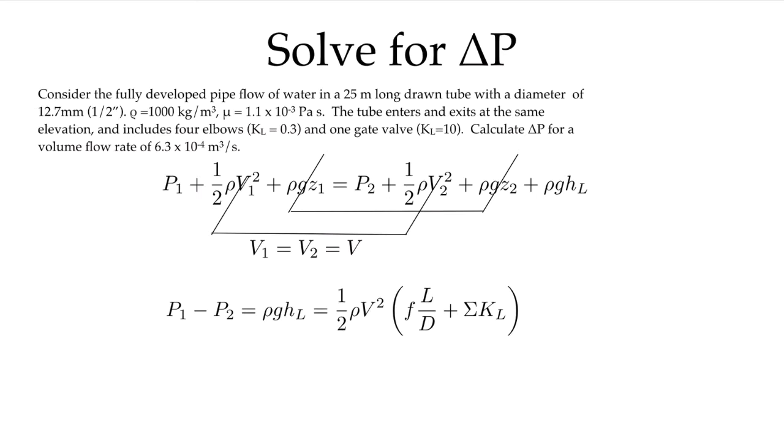Starting with our governing equation with the generic hL, the head loss, which includes both the major and the minor. Now because the flow is entering and exiting the pipe of the same diameter, the velocities will cancel out and the kinetic energy terms will go away. We are told that the tube enters and exits at the same elevation, which tells us that the z₁ and z₂ terms will cancel out.